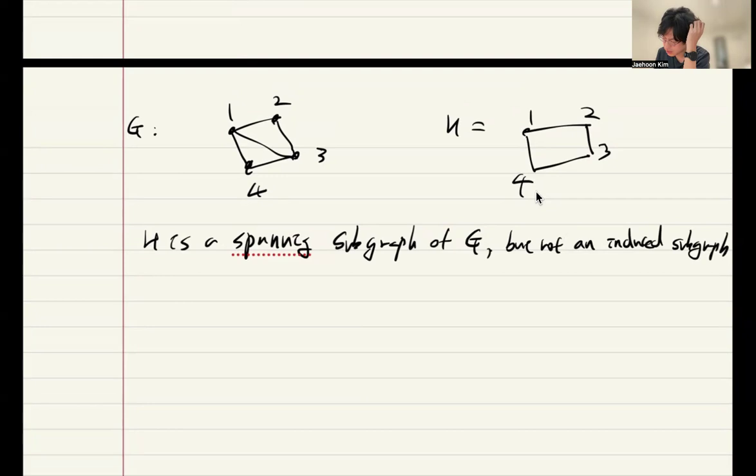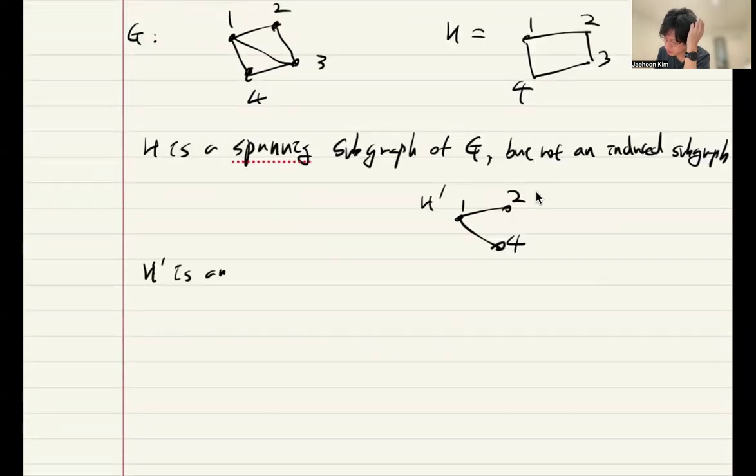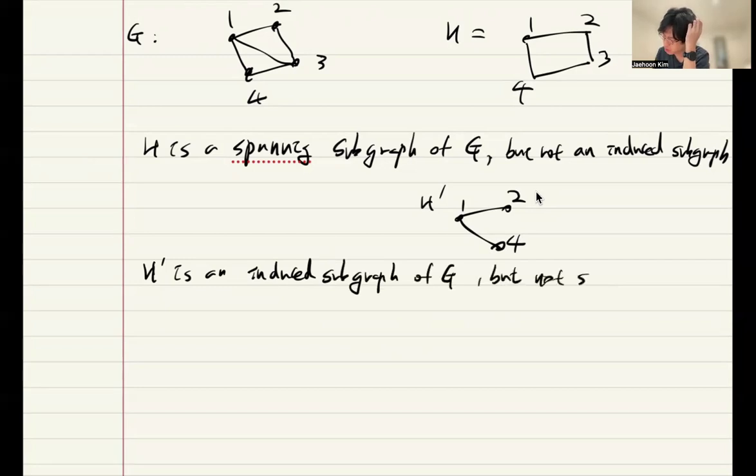On the other hand, if you take H prime with vertices 1, 2, 4, then H prime is an induced subgraph of G.